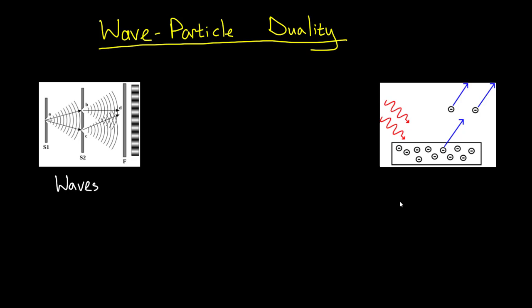However, in an earlier video you learned about the photoelectric effect. Einstein's Nobel Prize winning explanation for this required us to treat light as particles, photons. So is light a wave or a particle?